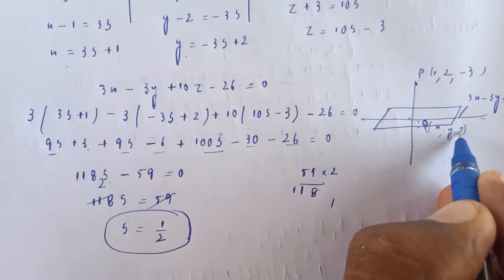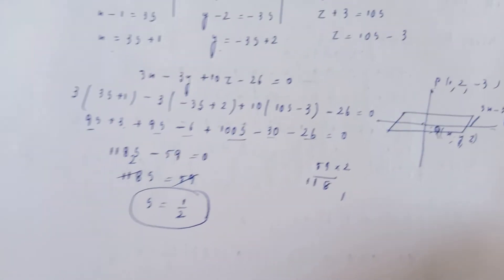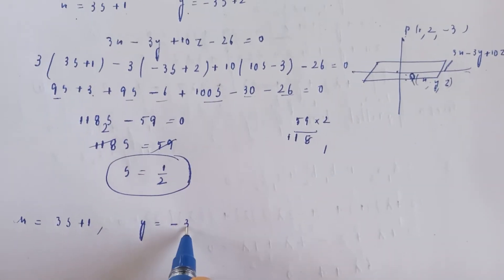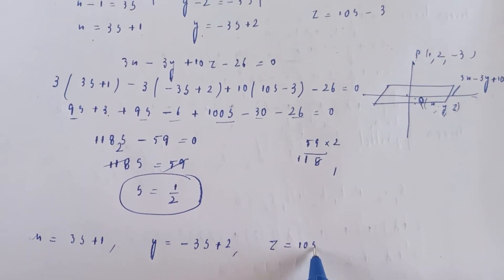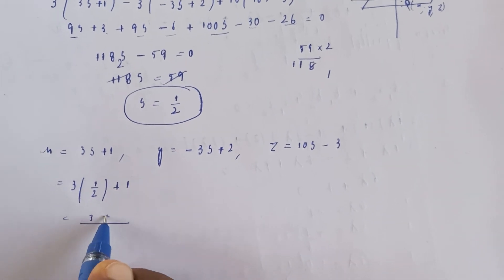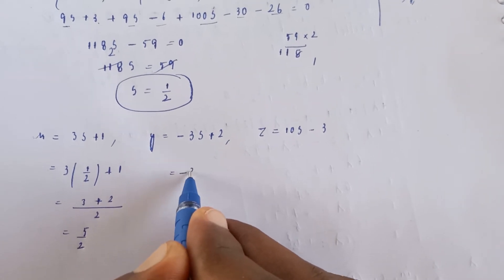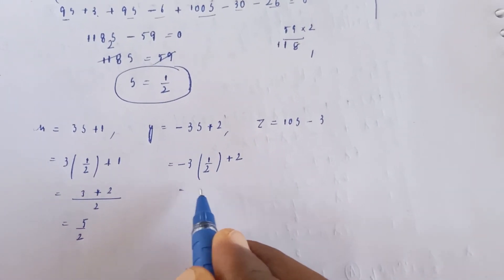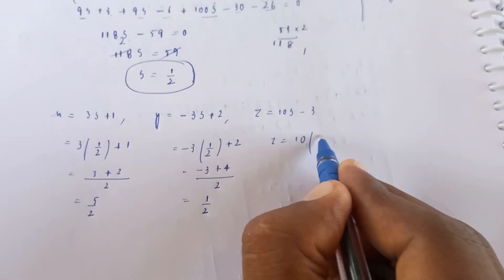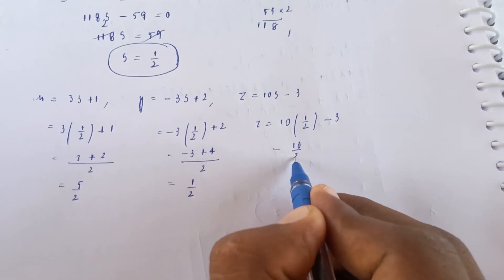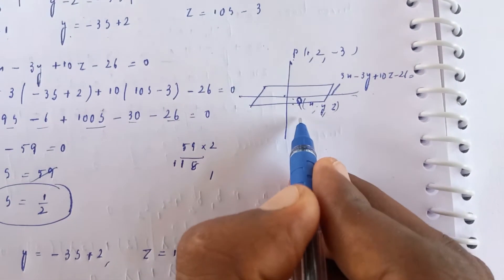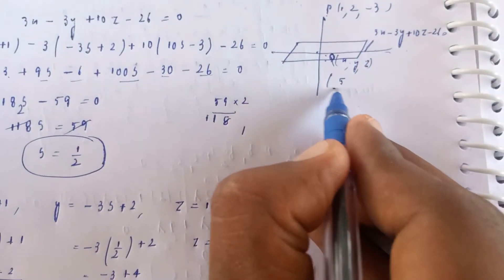With S equal to 1/2, substitute back: X equals 3 times 1/2 plus 1 equals 5/2. Y equals minus 3 times 1/2 plus 2 equals 1/2. Z equals 10 times 1/2 minus 3 equals 2. So Q, the foot of the perpendicular, is (5/2, 1/2, 2).